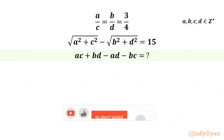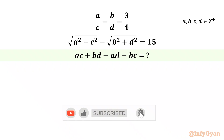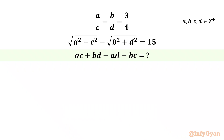Welcome to Infigyan. Today in this video we will be solving one very interesting question from algebra. We have a over c equal to b over d equal to 3 over 4, and square root of a squared plus c squared minus square root of b squared plus d squared equal to 15. We are asked to find the value of ac plus bd minus ad minus bc, given that a, b, c, d are positive integers.